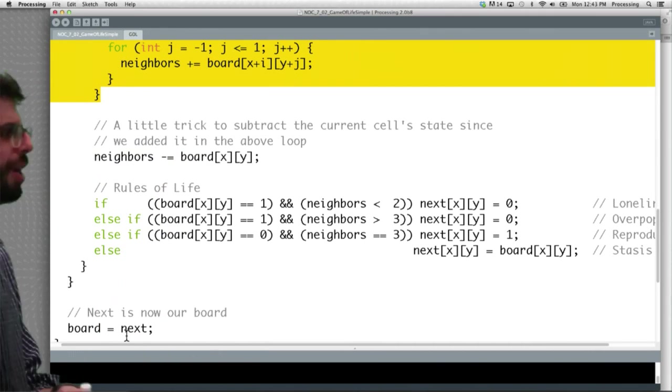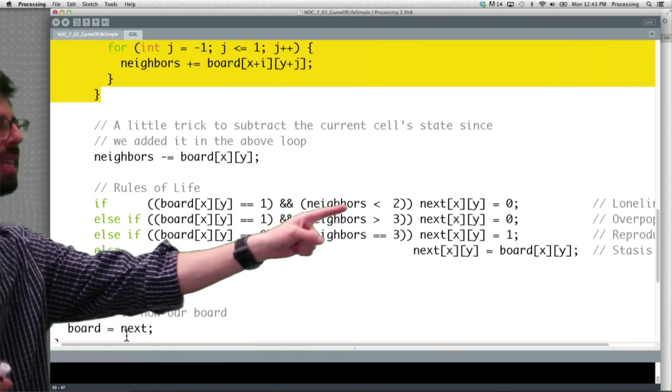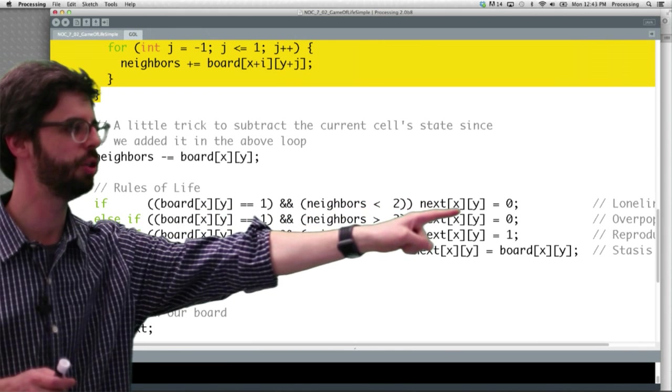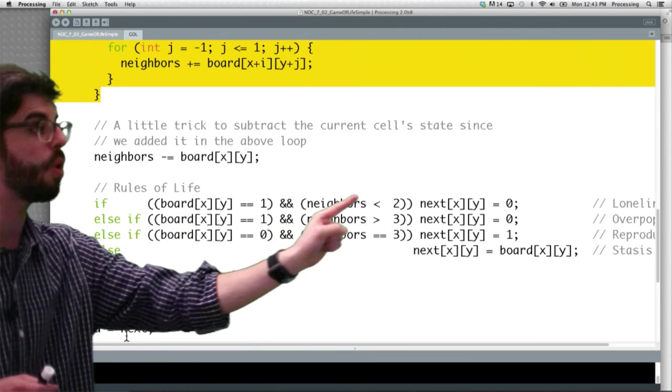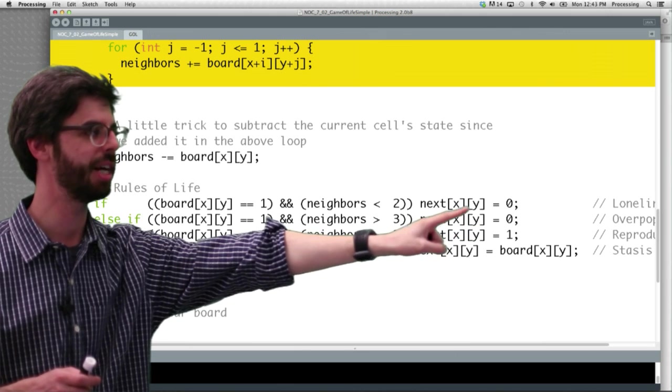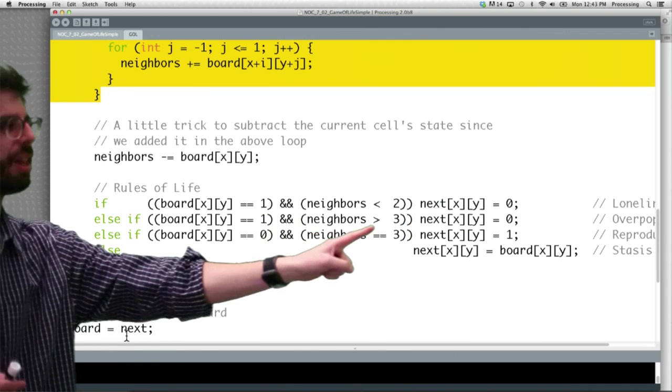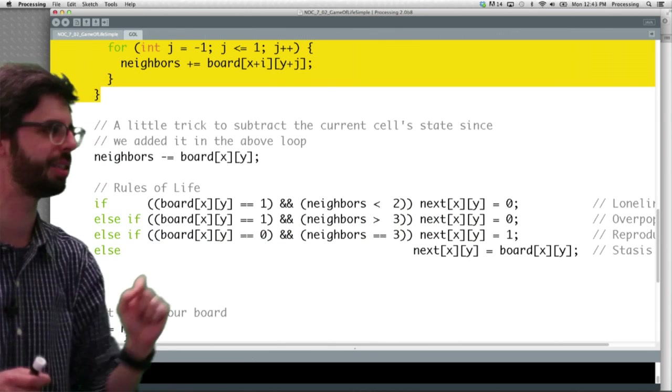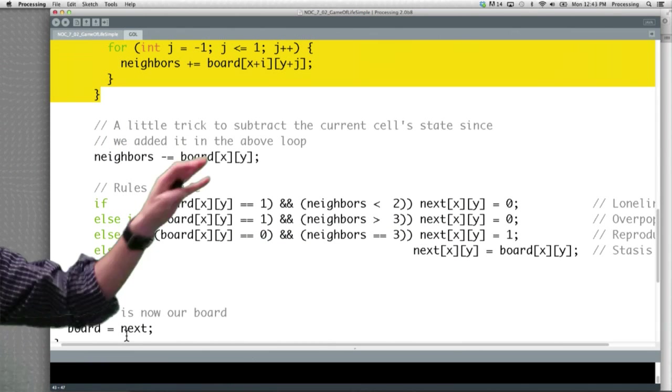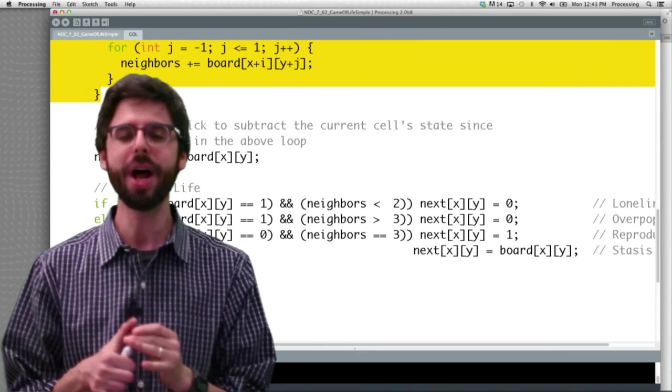So if we look at this here, we can see here are those rules. Loneliness: if I'm alive and I have less than two neighbors, my new state is zero and I die. If I am alive and I have more than three neighbors, my new state is zero and I die. Loneliness, overpopulation. Birth: if I am dead and I have exactly three live neighbors, my new state is alive. Otherwise, stasis, everything stays the same. So you can see just in a little set of conditional statements here based on what is my state, how many neighbors do I have alive, what is the new state?